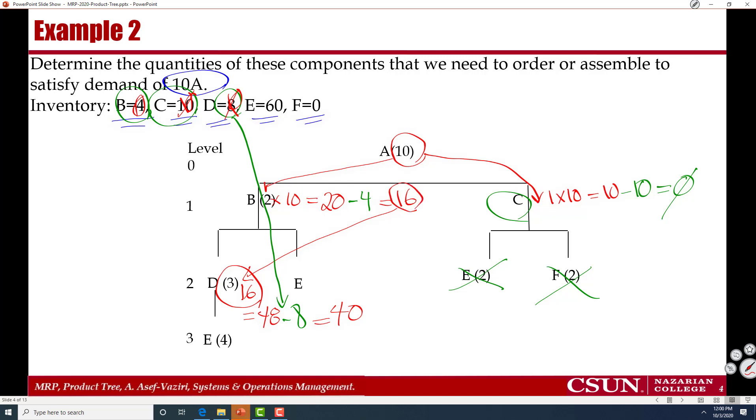I need 16B. And for each B I need 1E here. Therefore that is 1 times 16, that is 16. But I already have 60E. Minus 60. And that will leave me with 44. So that 60E is turned into 44.